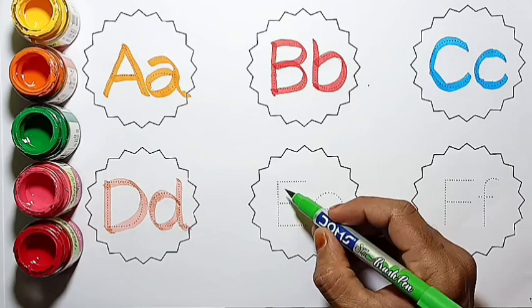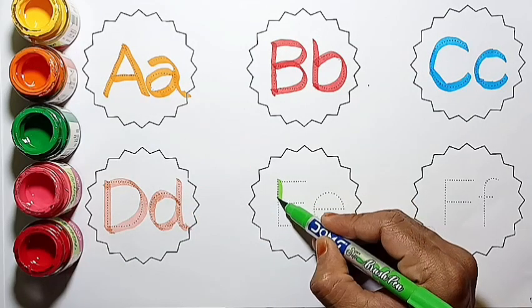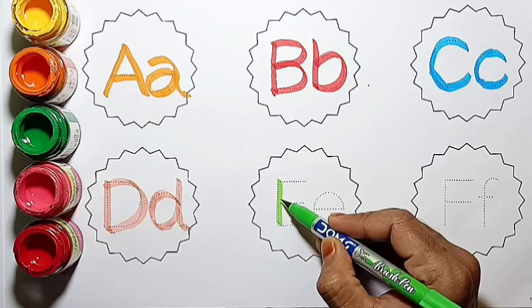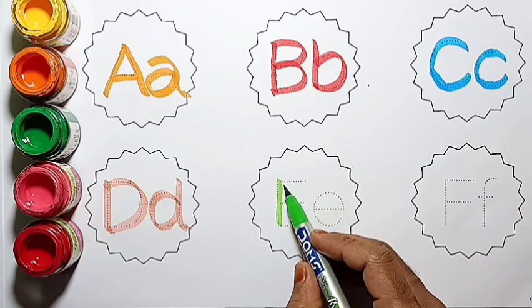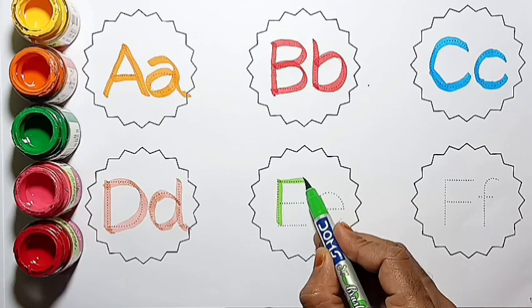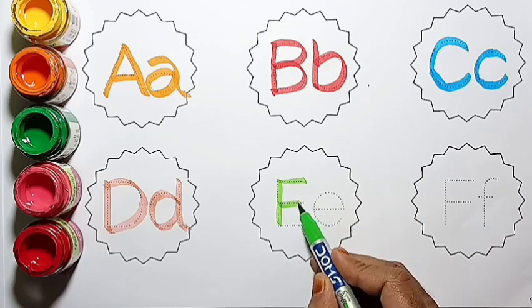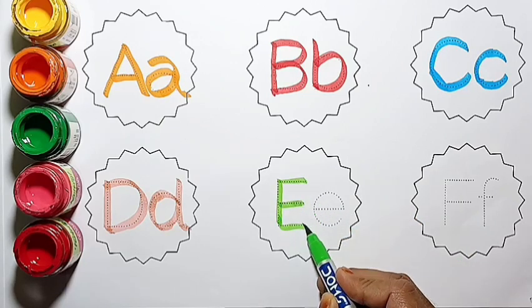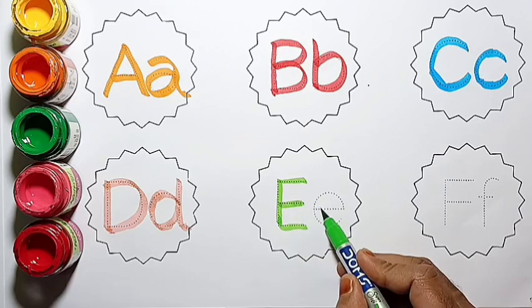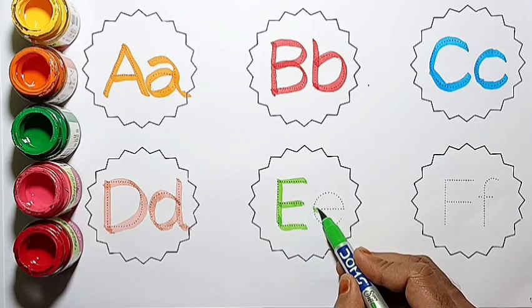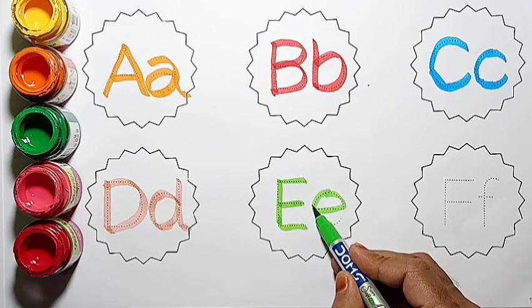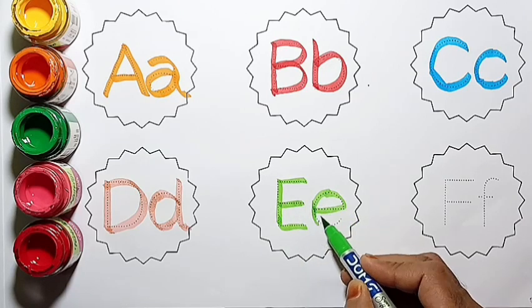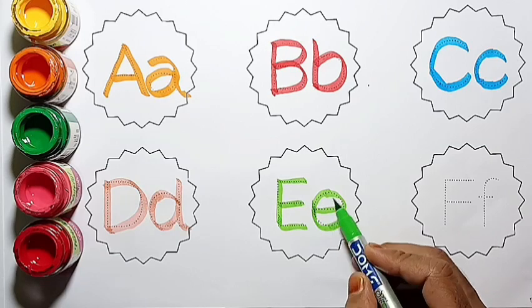Green color. Capital E. Small e. E for eagle. E for egg.